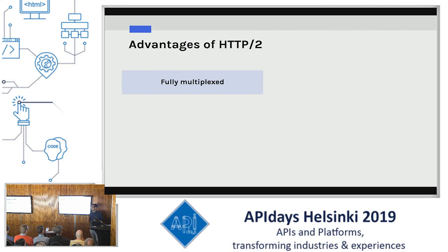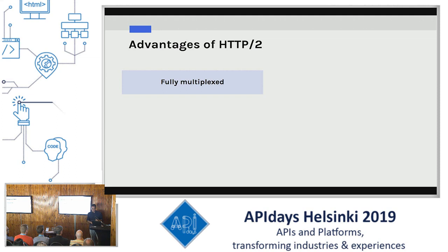HTTP2 is fully multiplexed — it can handle multiple requests and responses at the same point in time, which is a big win over HTTP1. Because the browser imposes head-of-line blocking, which limits the maximum number of parallel requests the browser can make. So if my endpoint is blazing fast but there are other requests in the pipeline, I'll be blocked until they complete. HTTP2 overcomes this.